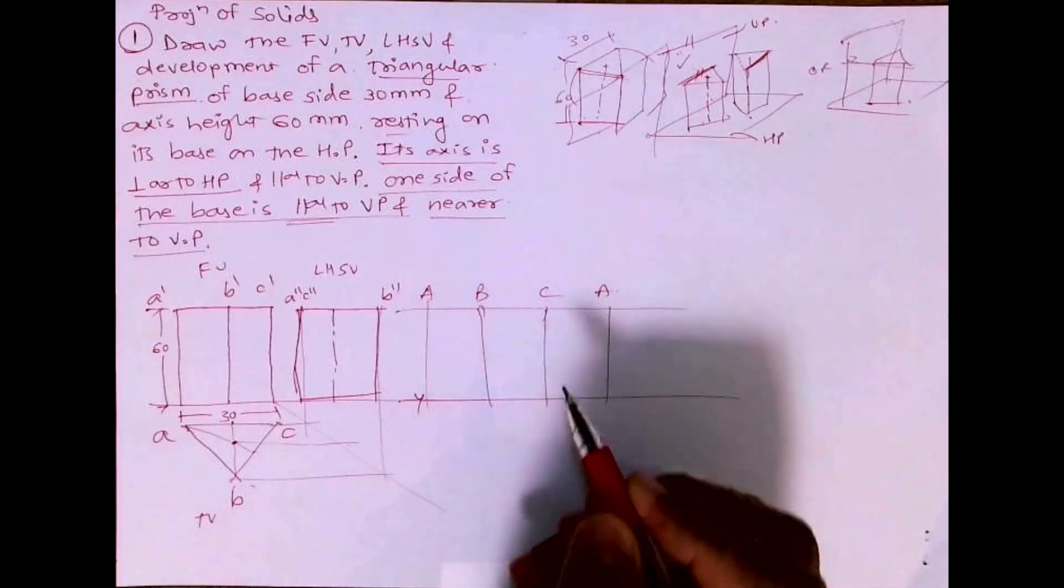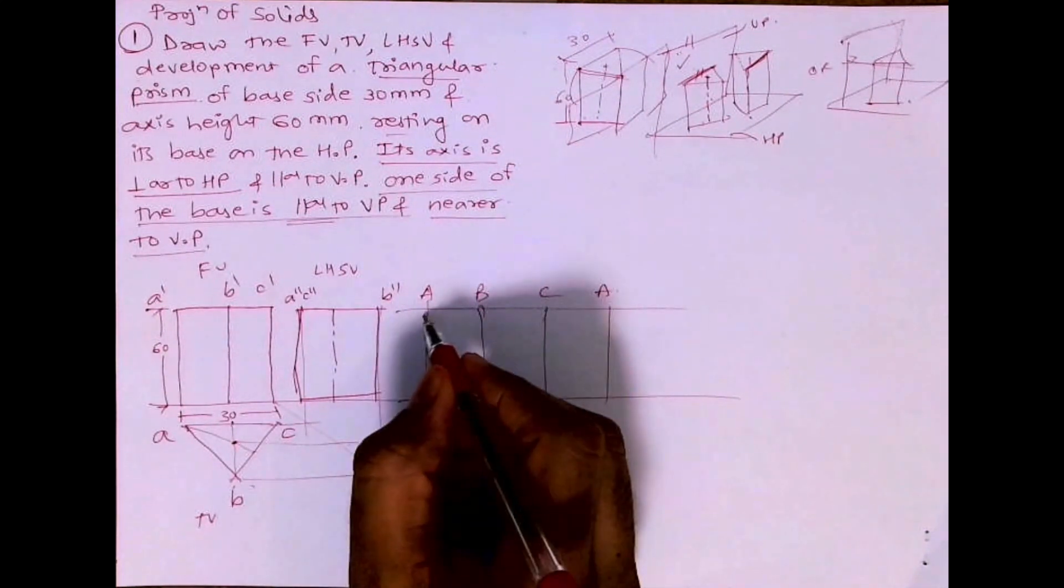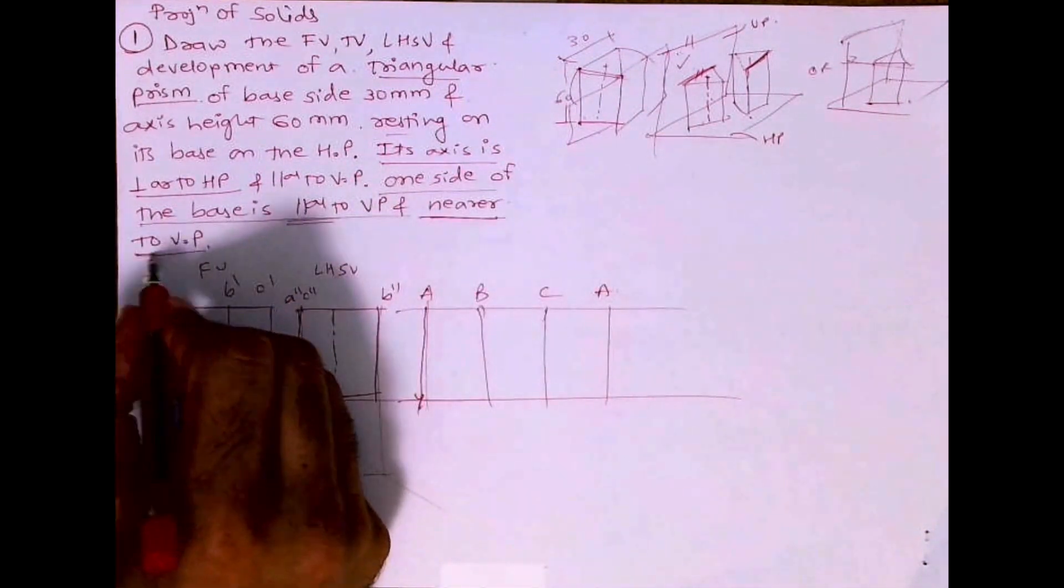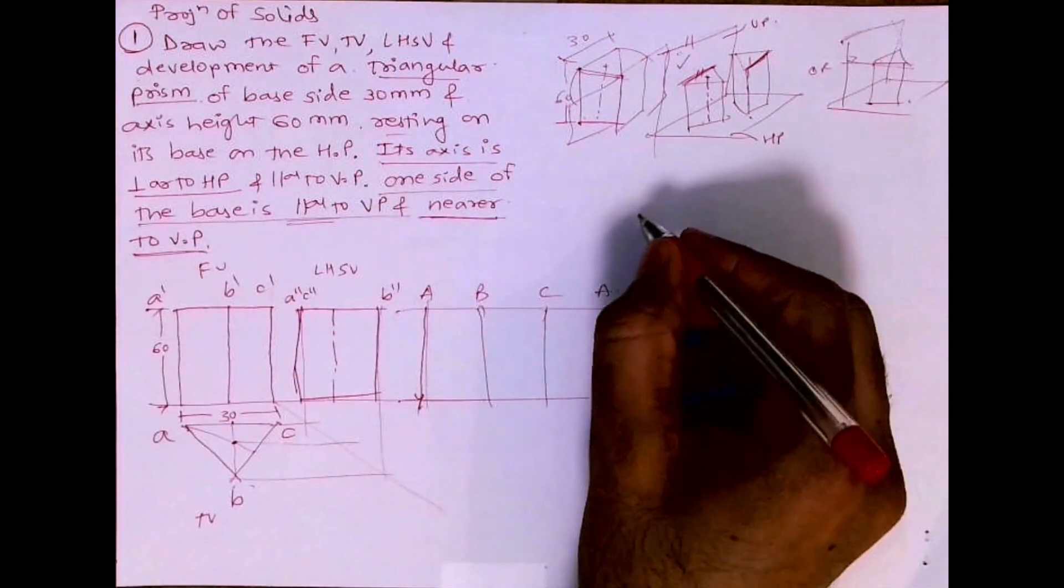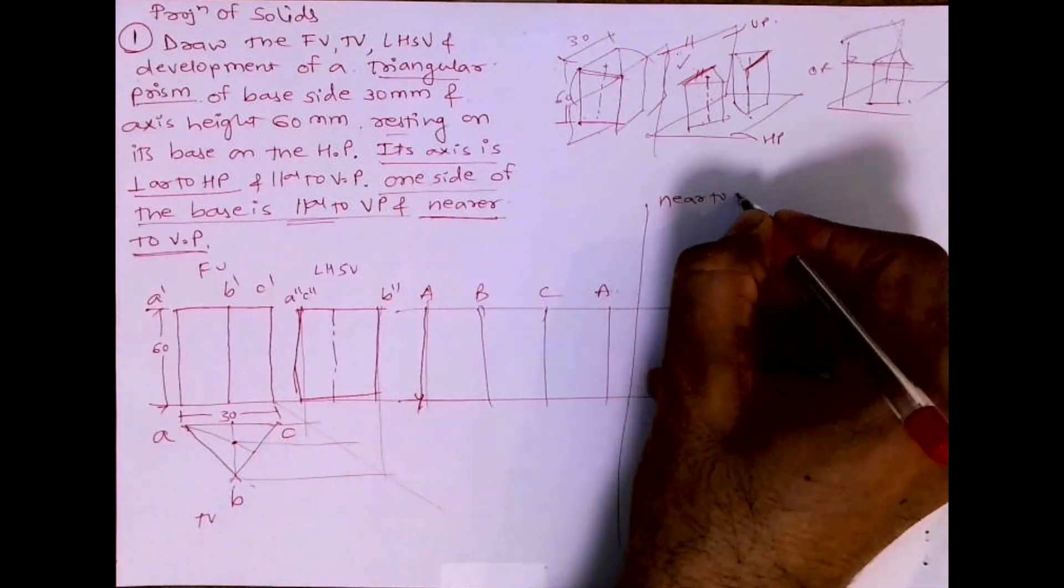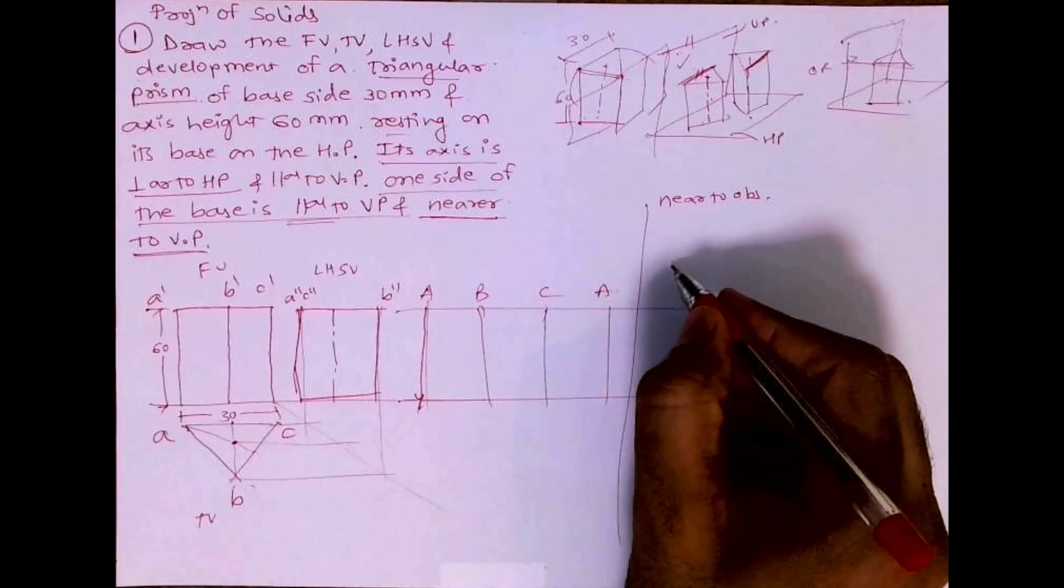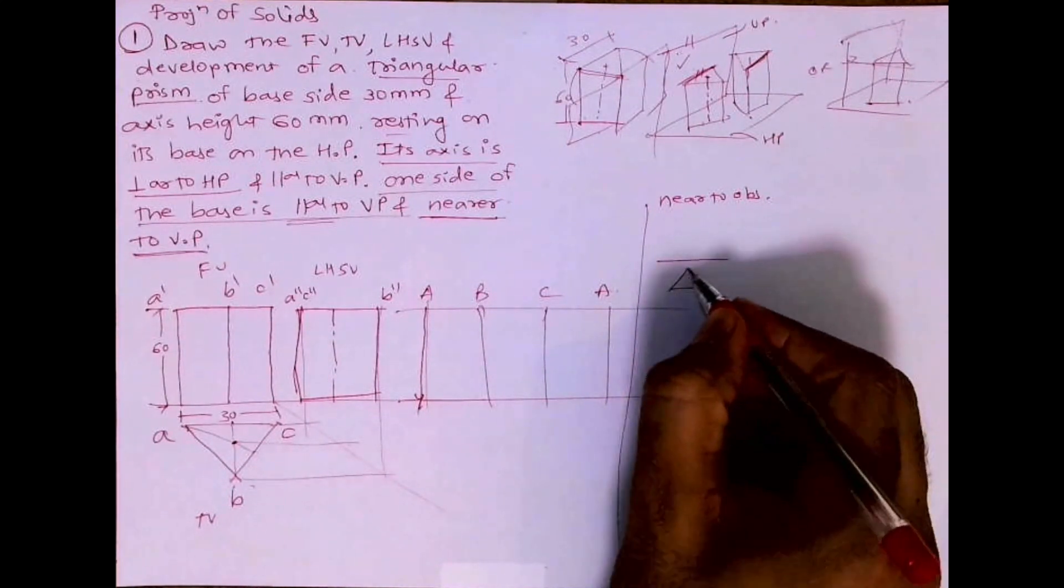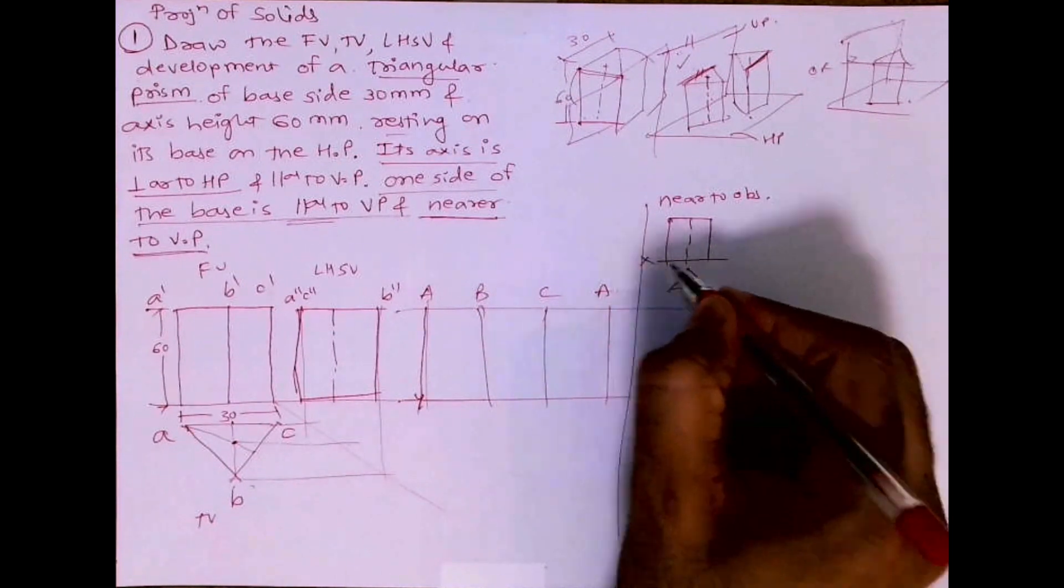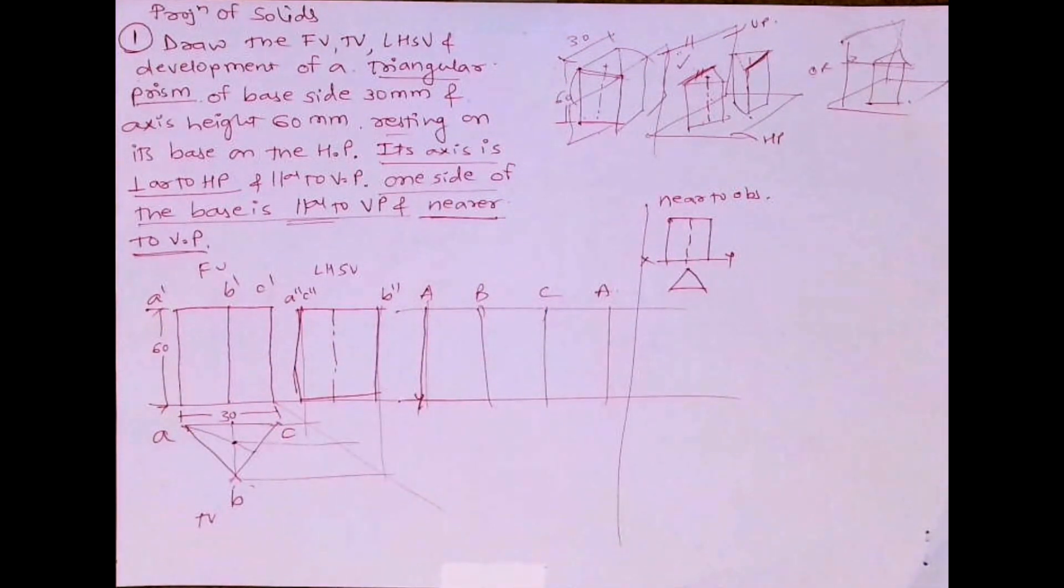So this is development. So I hope you people have understood this. And they say nearer to VP, so it is nearer to XY line. And when they say nearer to observer, it will be like this. Thank you.